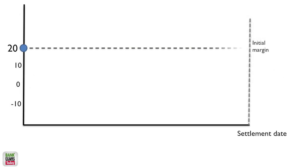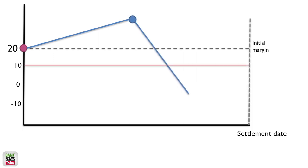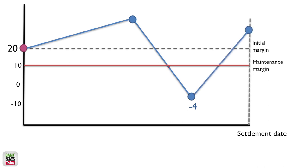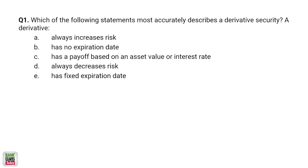Regarding margins: when you do futures or options trading, you give an initial margin. If you make money, you get the difference. But if you lose money and the margin falls below the maintenance margin, you get a margin call from your broker to top up the account — otherwise your position is squared off. That is how the maintenance margin system works.